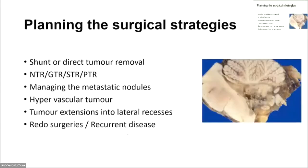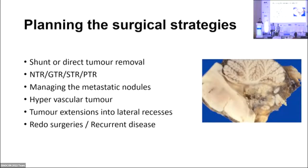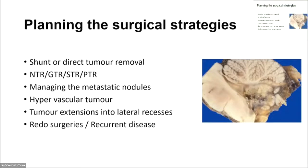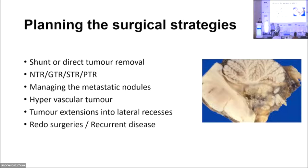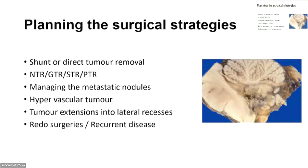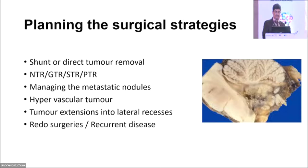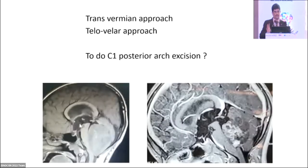As a surgeon, I'll restrict my topic to surgical strategies. When a child presents with medulloblastoma, the neurosurgeon must consider: hydrocephalus management, whether to perform a shunt before surgery, whether to aim for GTR or STR, management of metastatic nodules, blood loss in young children — even a small blood loss is significant — lateral extension, and what to do with residual or recurrent tumors.